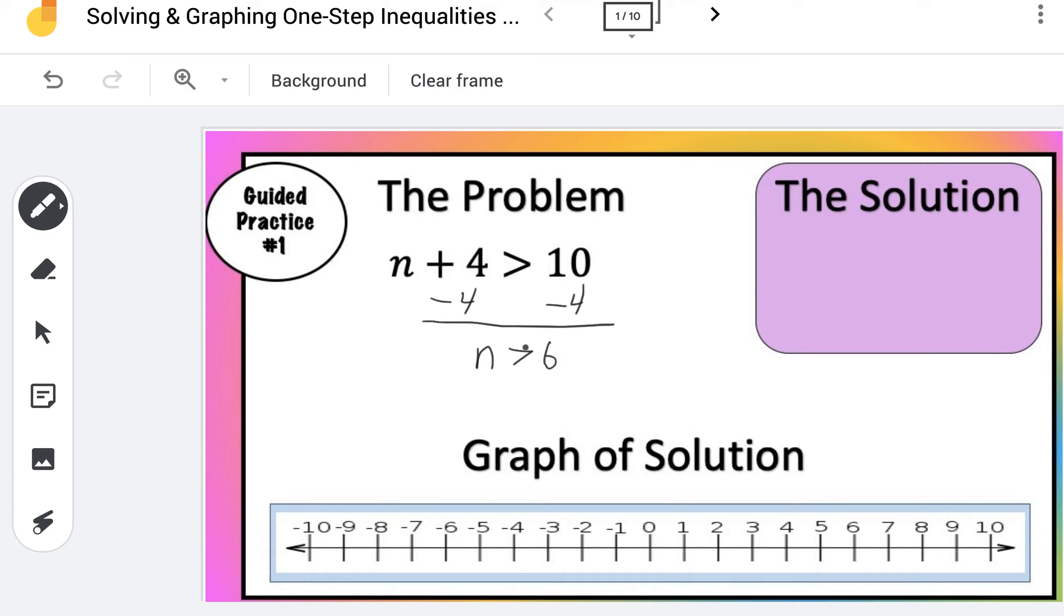So all numbers greater than 6 would be a solution. Come over down to the graph, and this time we're going to draw an open circle. It's all numbers greater than, so we're going to draw an arrow to the right like this. So again, our solution is n is greater than 6.